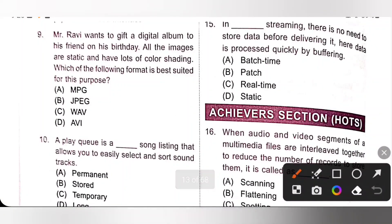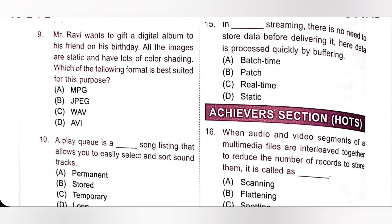Ninth one: Mr. Ravi wants to gift a digital album to his friend on his birthday. All the images are static — that is, still images — and have lots of color shading. Which format is best suited for this purpose? The best suited format is JPEG, option B. Among the given options, only JPEG is a graphic format that supports lots of colors and also compresses static images.